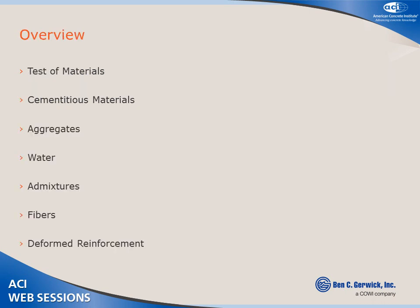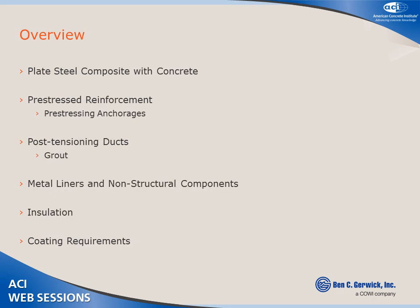This is the overview of the presentation. We'll first talk about tests for materials: cementitious materials, aggregates, water, admixtures, fibers, and deformed reinforcement. We also have plate steel — sometimes composite with the concrete — so as Charles said, this is a comprehensive type of code. It's not strictly limited to concrete but also makes references to other codes relevant for related materials, including non-structural liners, insulation, and coatings.